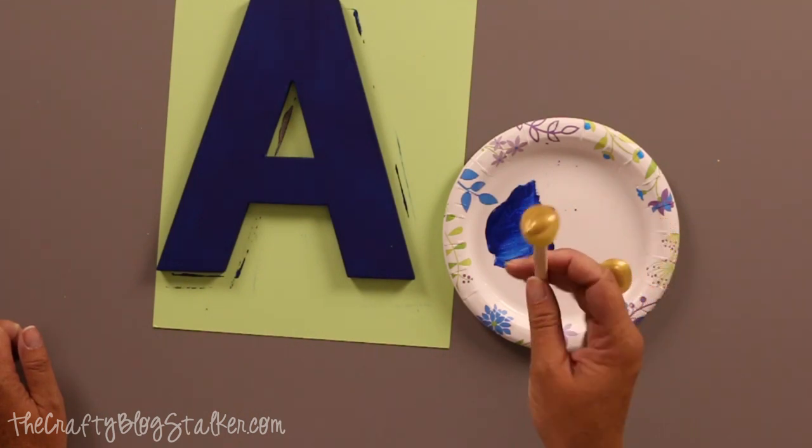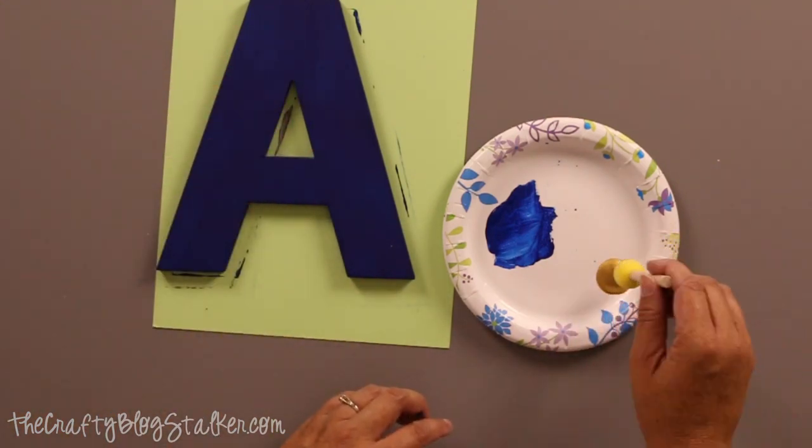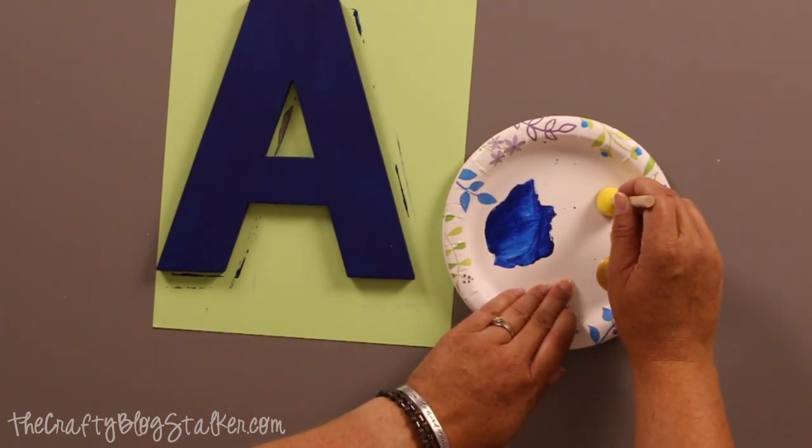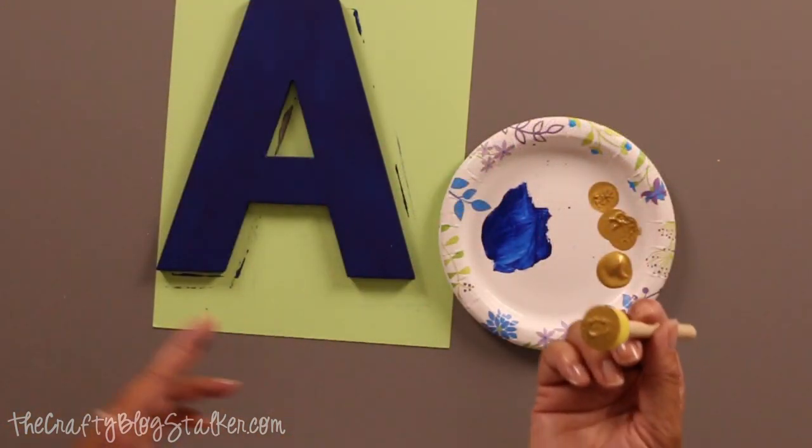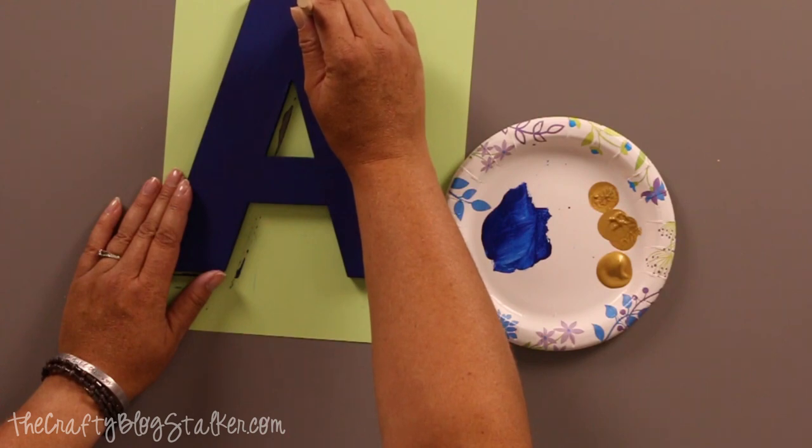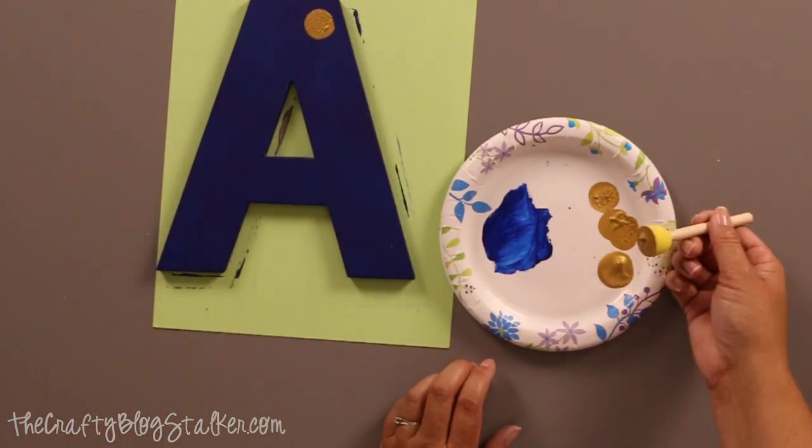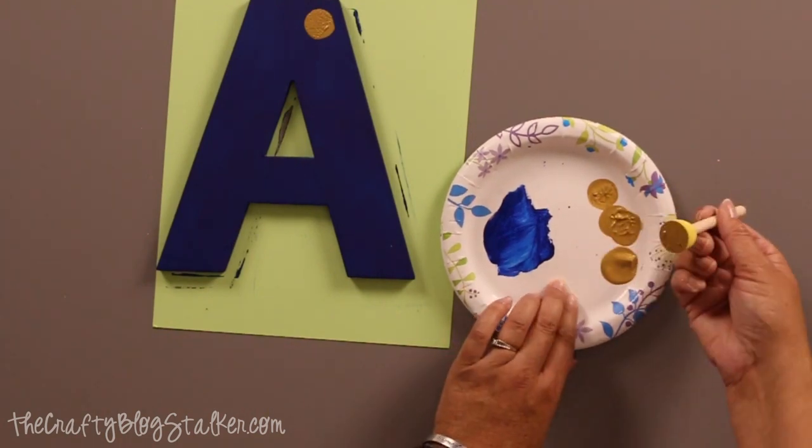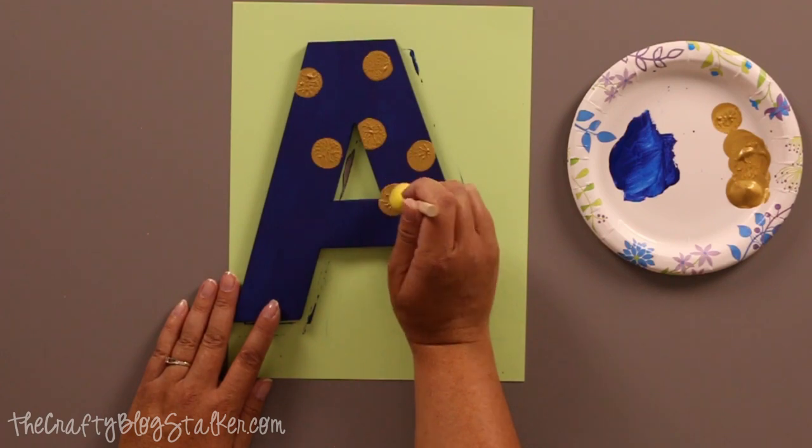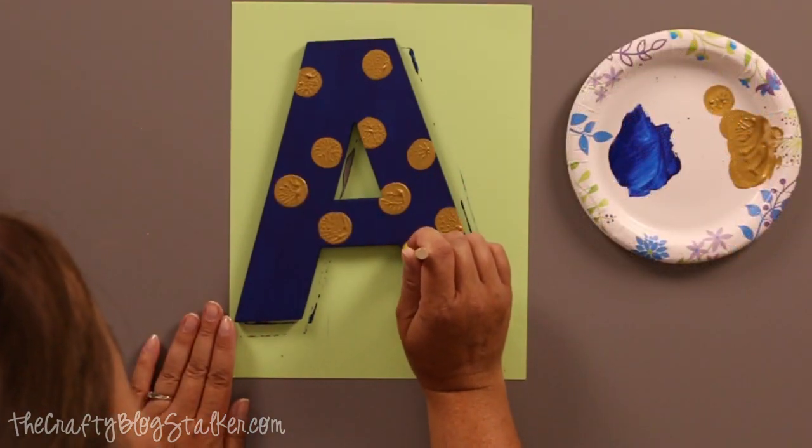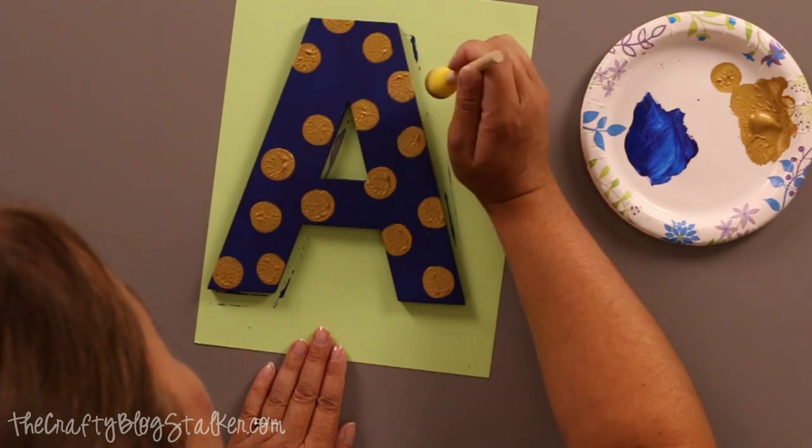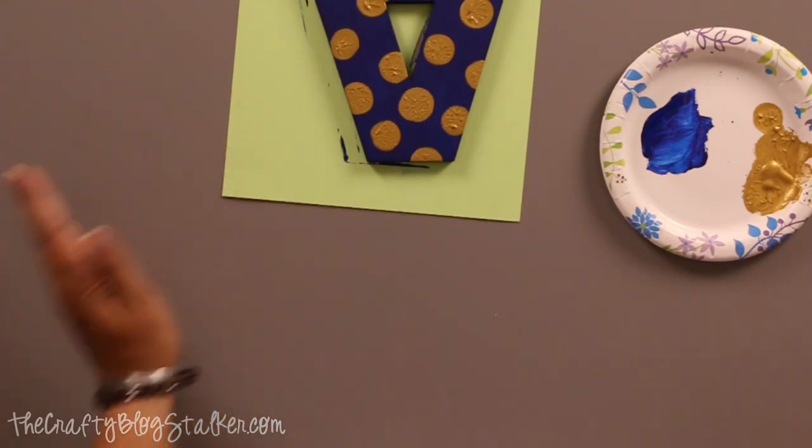I've got some paint on there and I'm going to dab it off. I'm not going to go in any order, just random dots. I'm going to put that down, kind of go in a circle motion and lift up straight. I'm just going to do that all over my letter. There is my gold polka dotted A.